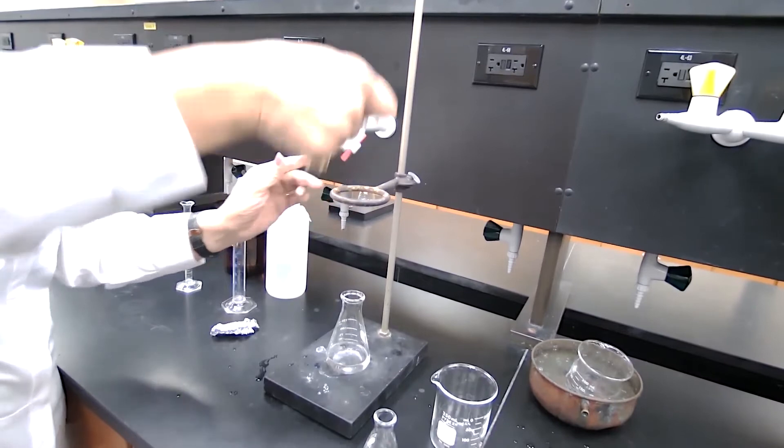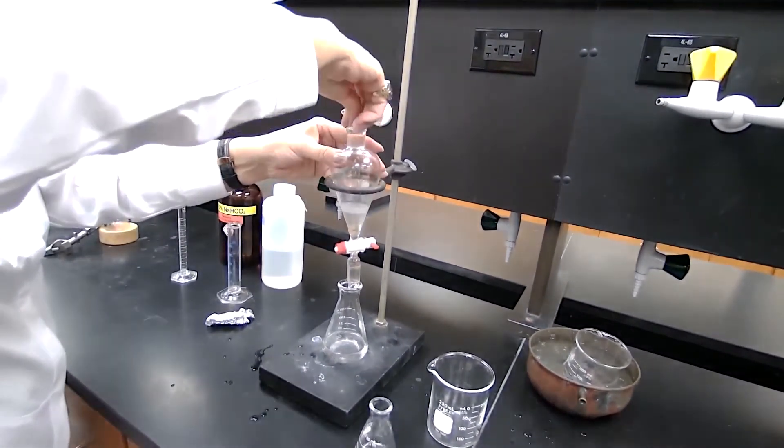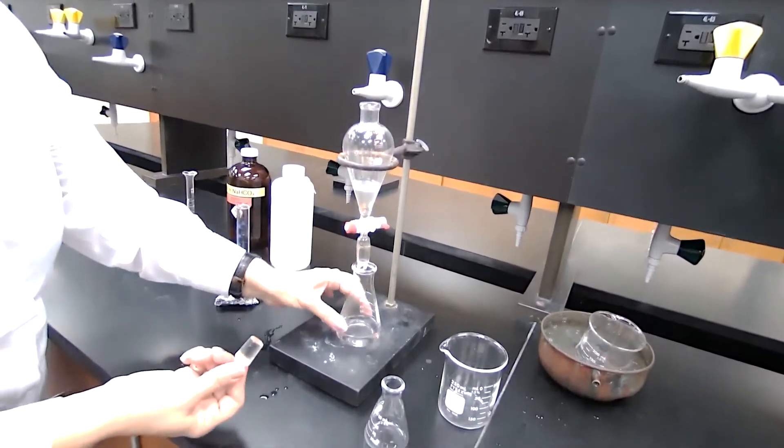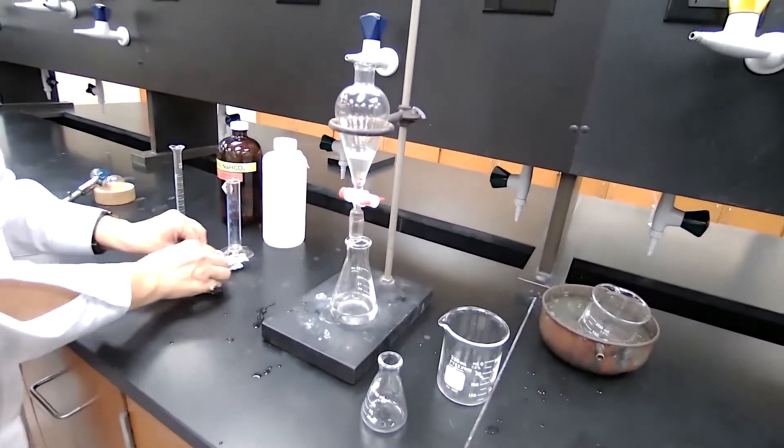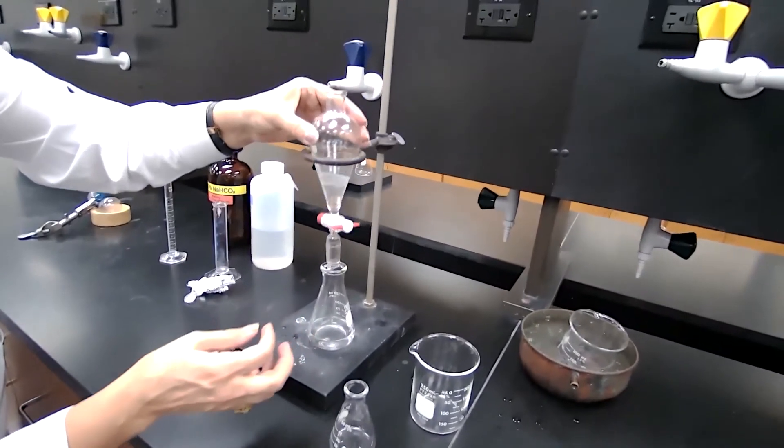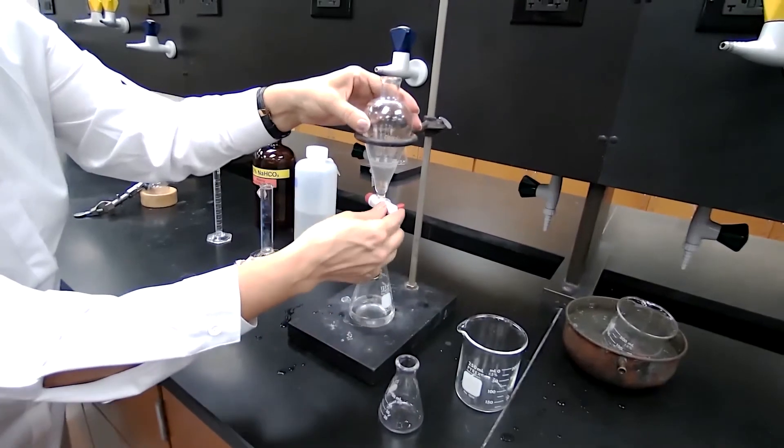This time washing with water is basically removing, again, sodium bicarbonate or any soluble ions that we have in there. This is the last wash. We wait for the layers to separate. And drain off the bottom layer.